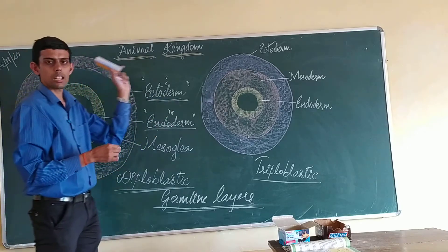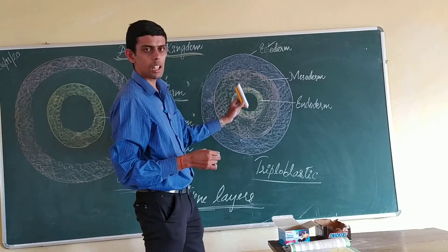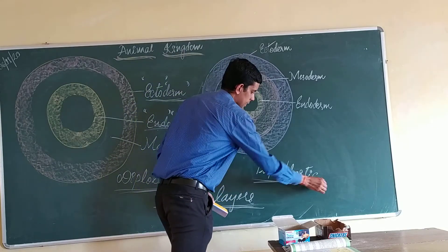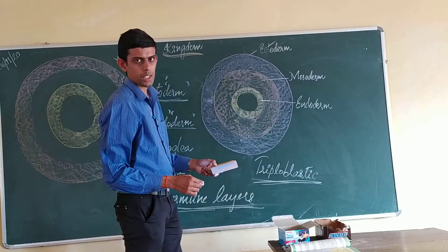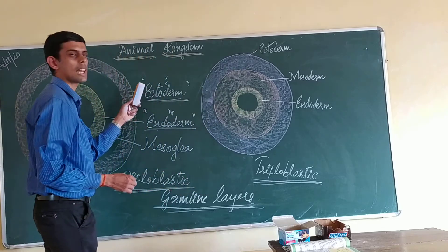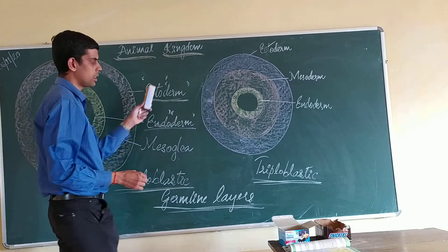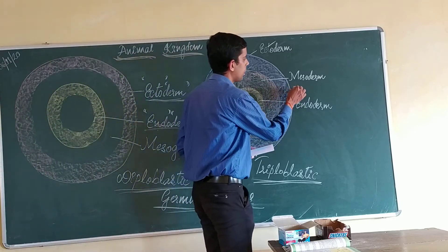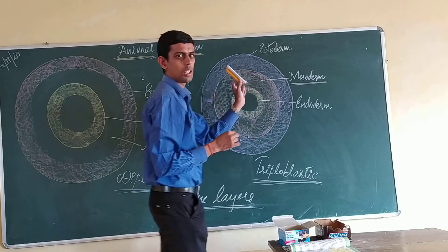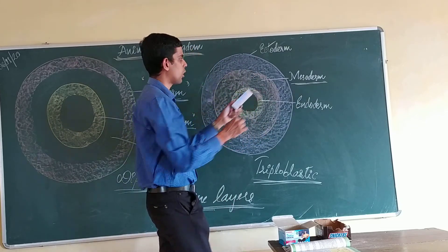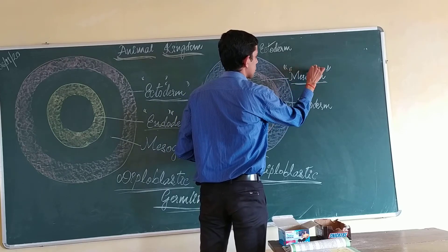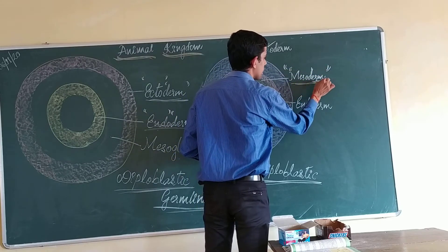The same layers are present in another type of animals called triploblastic animals. Here, along with the outer ectoderm and inner endoderm, we also find a middle layer that is differentiated, and that is called mesoderm. 'Meso' refers to middle and 'derm' refers to layer.